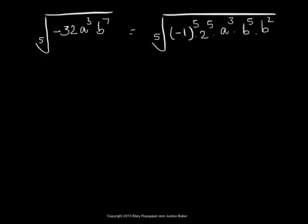So the given expression, fifth root of negative 32 a cubed b to the seventh, is same as fifth root of what we obtained now. Now, take the fifth root of every fifth power factor and leave the other factors inside the radical sign.